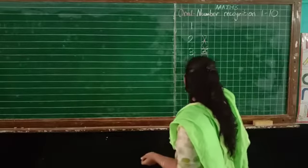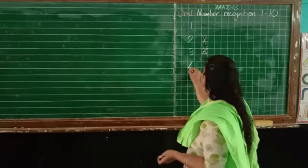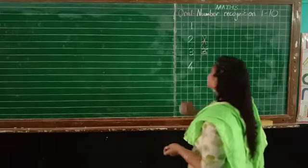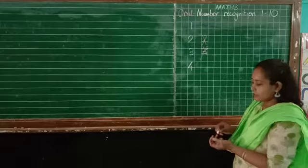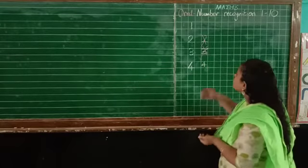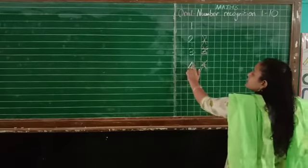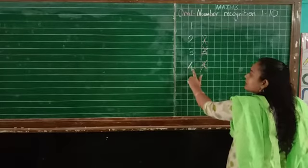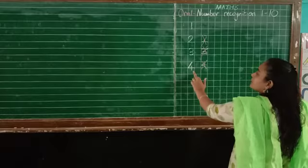Then 4. Slanting line, slipping line, standing line. This is 4. See, some of you write 4 like this also. So this 4 is wrong. Slanting line, slipping line, standing line, 4.